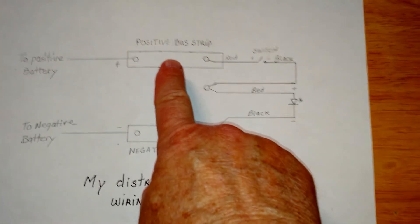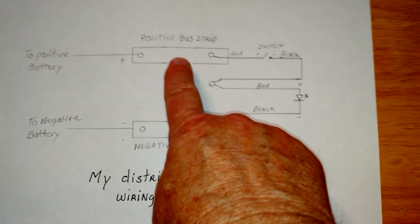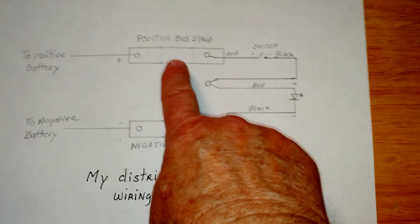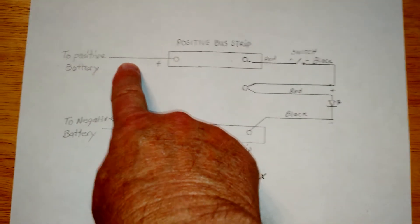Okay, first of all, this is the positive bus strip that you see in my box. This is wired to the plus side of the battery.